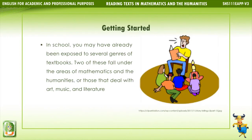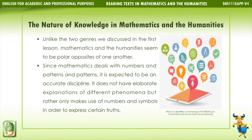Getting started. In school, you may have already been exposed to several genres of textbooks. Two of these fall under the areas of mathematics and the humanities — those that deal with art, music, and literature. Unlike the two genres discussed in the first lesson, mathematics and the humanities seem to be polar opposites of one another. Since mathematics deals with numbers and patterns, it is expected to be an accurate discipline.